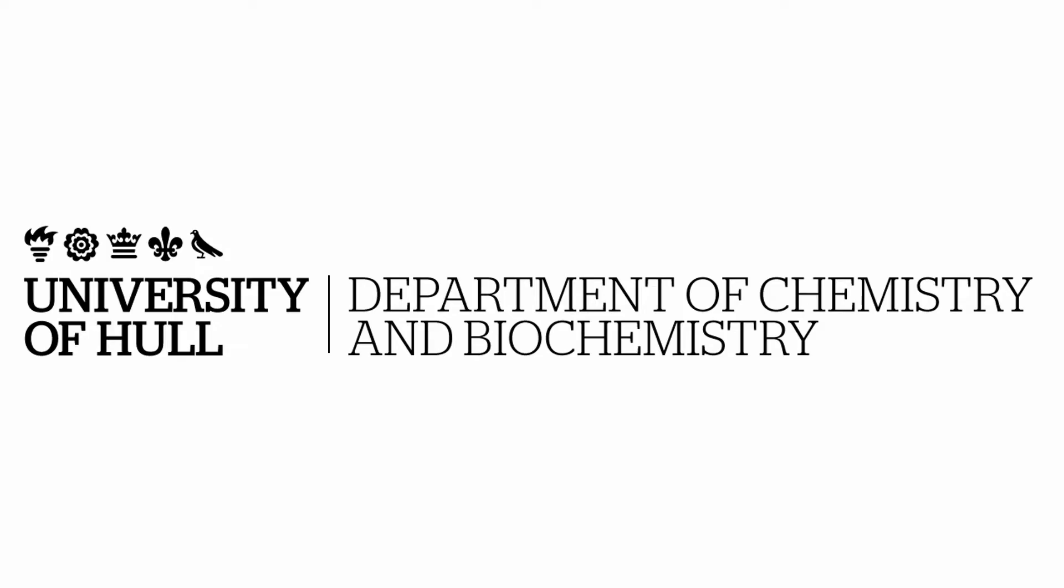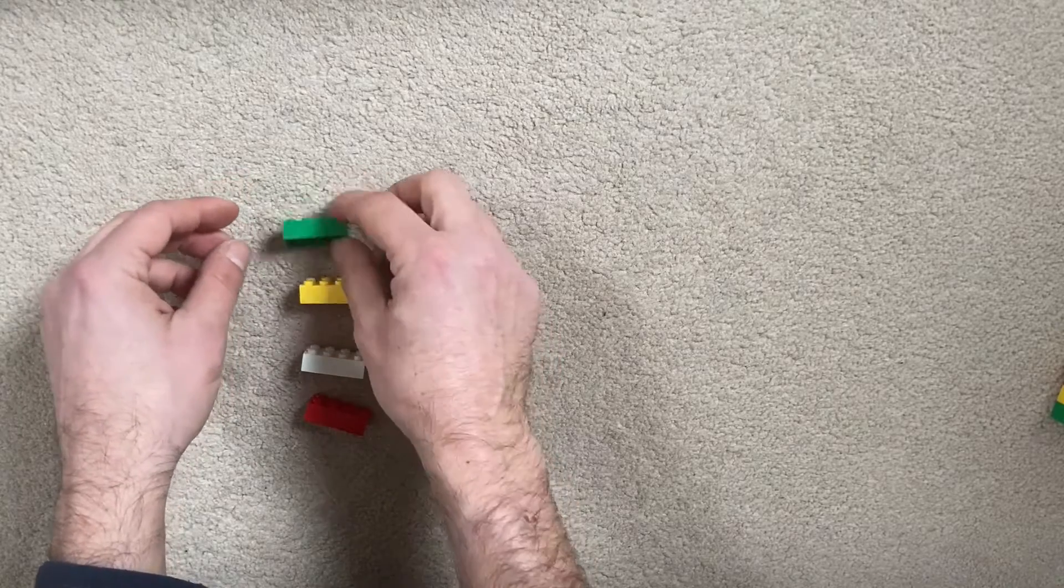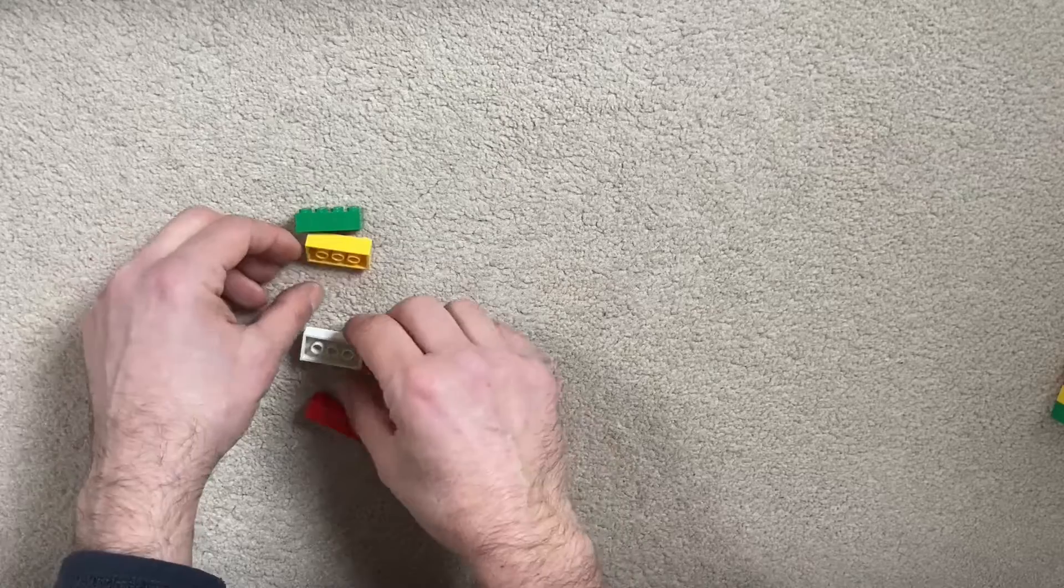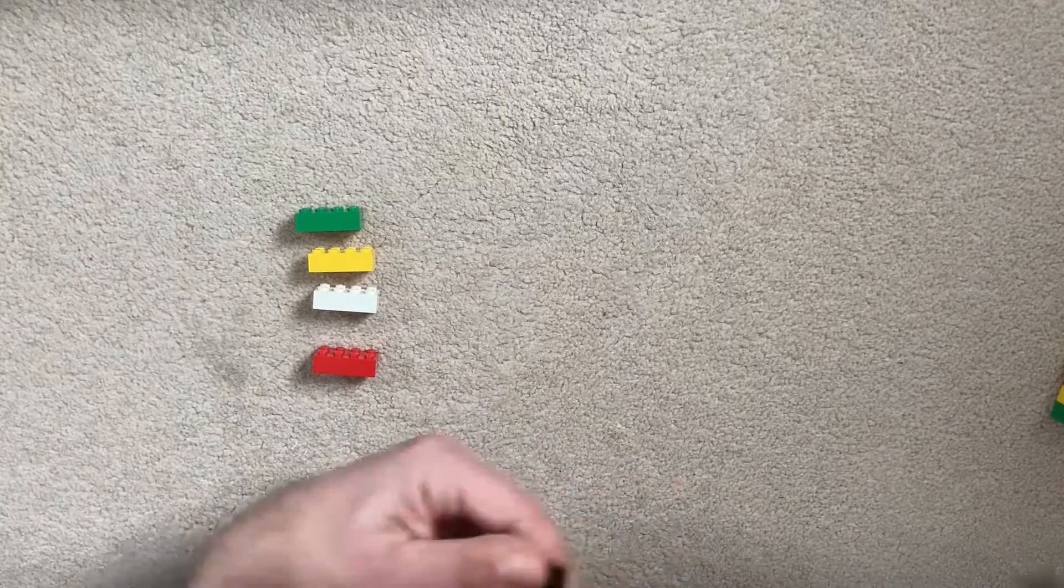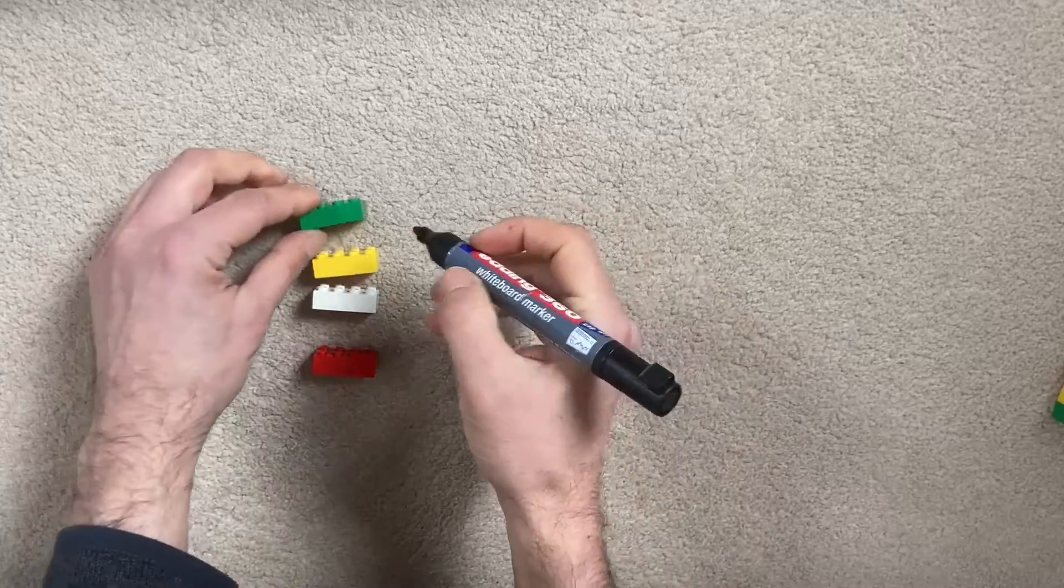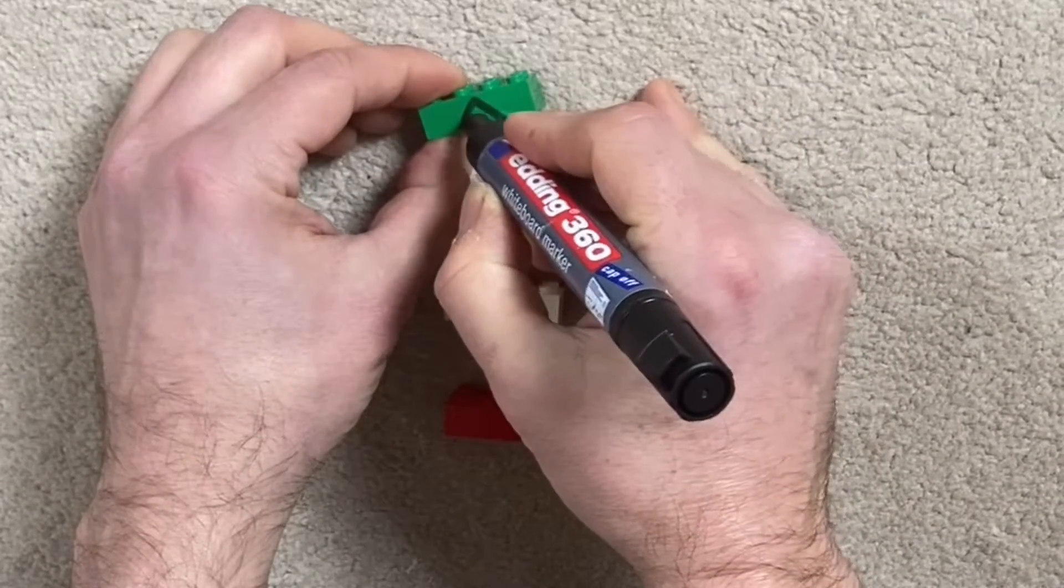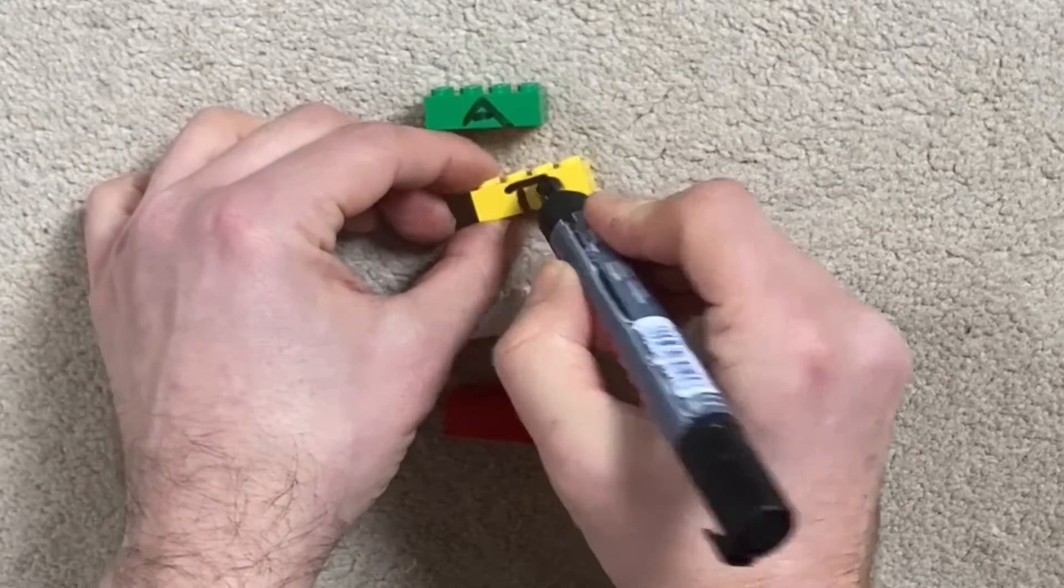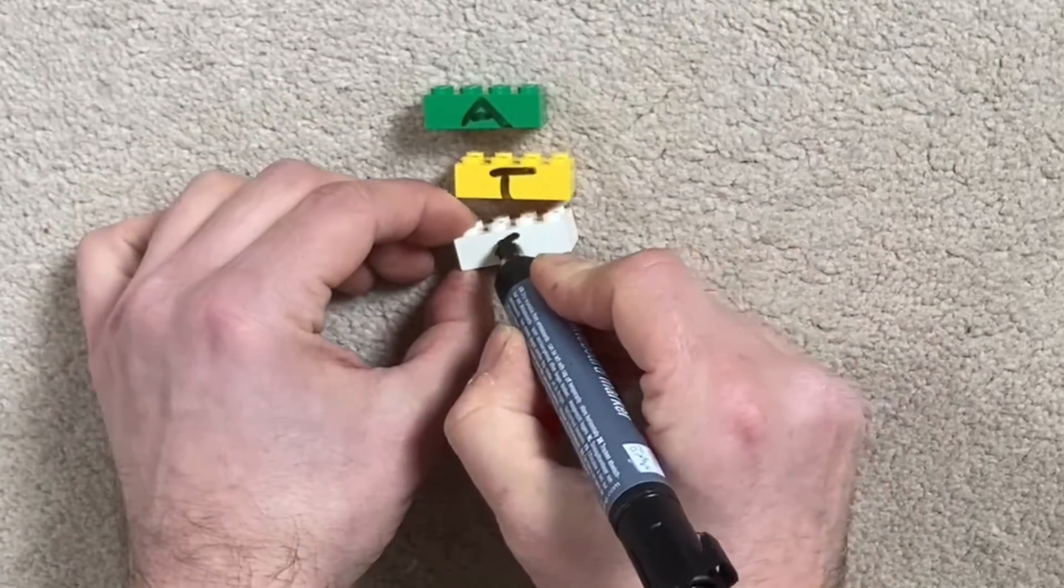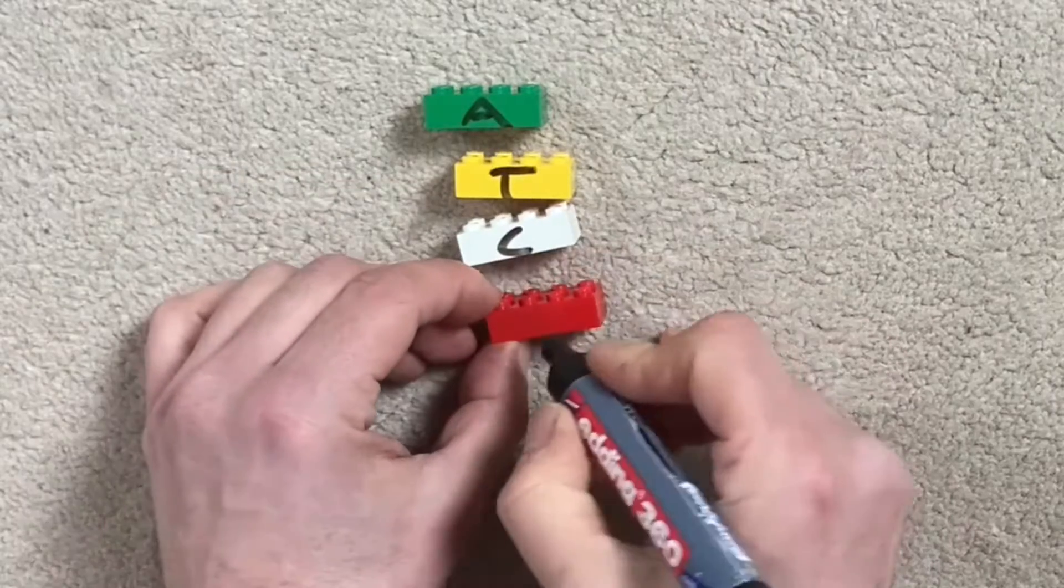So first, a quick recap of DNA. DNA is made up of four bases, building blocks called bases, and they are known as adenine, we'll call that one A there, thymine, T, cytosine C, and guanine.